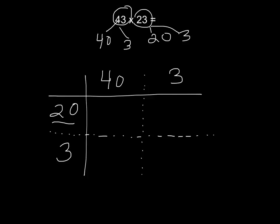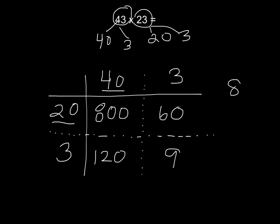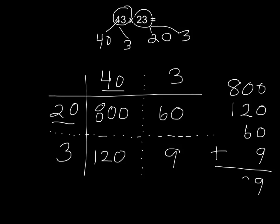The first one we will do is 20 times 40. If I know that 2 times 4 is 8, then I know 20 times 40 is 800. Now we'll do 40 times 3 — 4 times 3 is 12, so 3 times 40 is 120. 20 times 3: I know 2 times 3 is 6, so 20 times 3 is 60. And 3 times 3 is 9. If I add up all of my numbers — 800 plus 120 plus 60 plus 9 — my answer to 43 times 23 is 989.